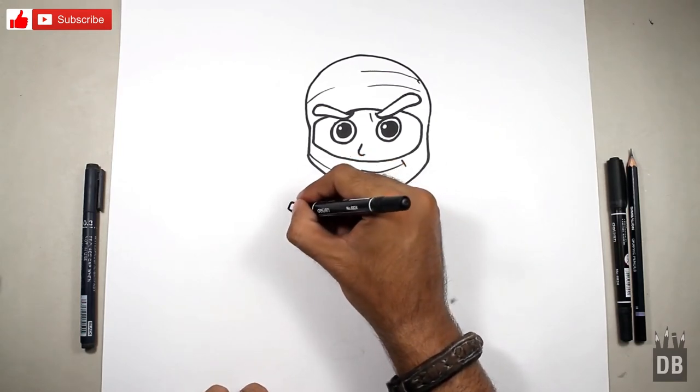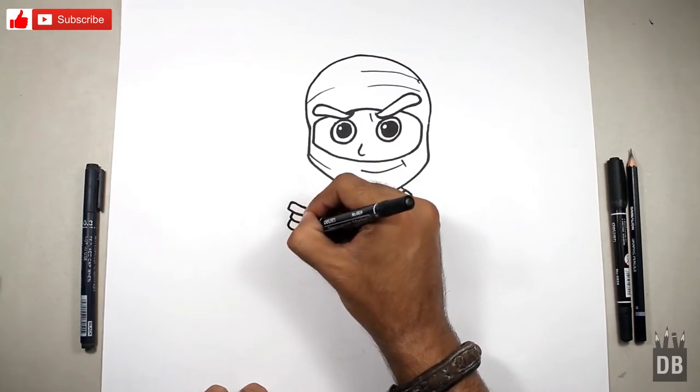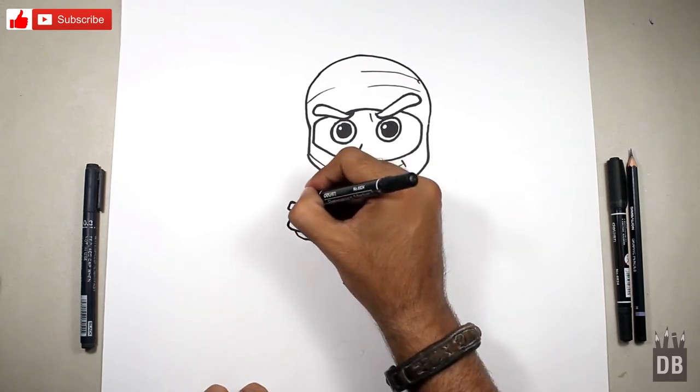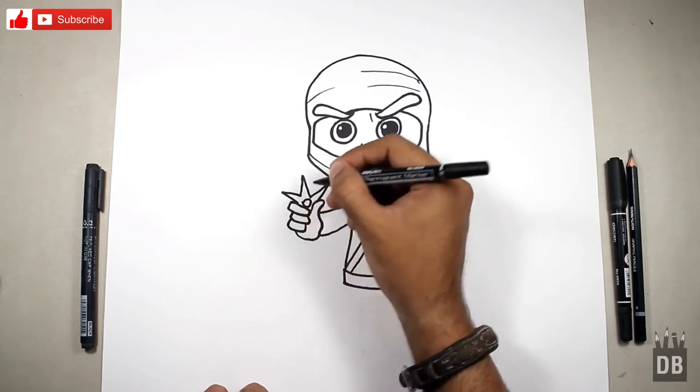Draw the hand line where he is holding the weapon, and he is holding his weapon to throw.